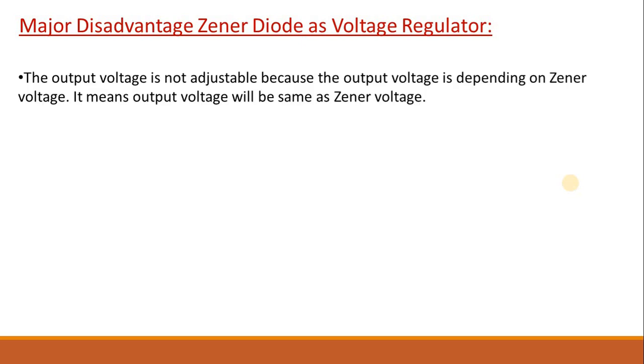Now let's discuss certain major disadvantages of Zener diode as voltage regulator. The very first one is output voltage is not adjustable because the output voltage when we use Zener diode will be equal to the Zener voltage.